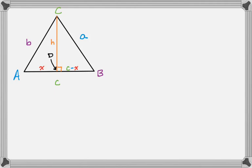The first triangle I'm going to look at is triangle BCD. That's the right half of the picture. In that triangle, I'm just going to use the Pythagorean theorem, and it tells me that a squared is h squared plus the quantity c minus x squared.